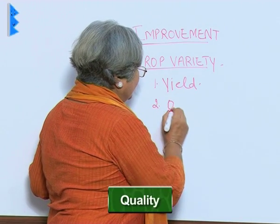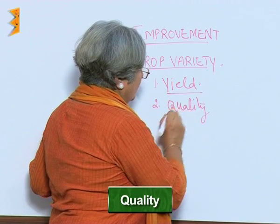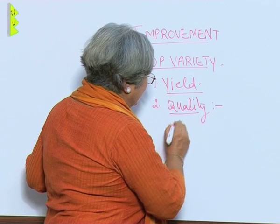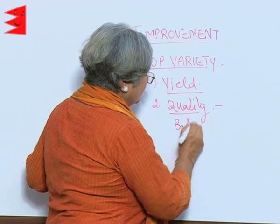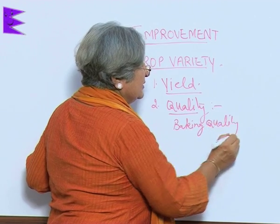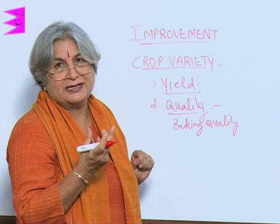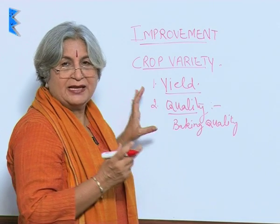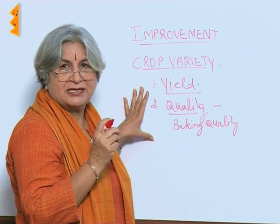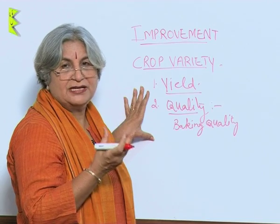The second desirable trait is quality. For example, in the case of wheat, it is the baking quality. Just like oil-yielding plants — it is the fat content they provide that is the quality. Whenever we are choosing a variety or when we are choosing our seeds, we have to be careful about what kind of quality of seeds will it produce.